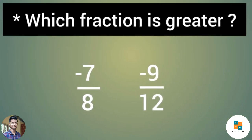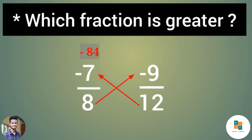Okay friends, last example. This fraction involves negatives — suppose minus 7/8 and minus 9/12. We will compare these fractions. The first fraction's numerator is 7 and the second fraction's denominator is 12. Cross multiply: minus 84. Next, the first fraction's denominator is 8 and the second fraction's numerator is 9. Cross multiply: minus 72. Since minus 72 is greater than minus 84, therefore minus 9/12 is greater than minus 7/8.